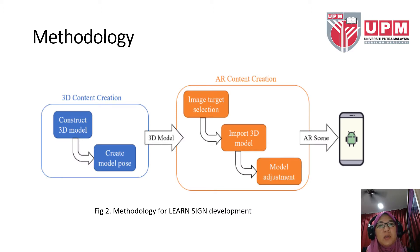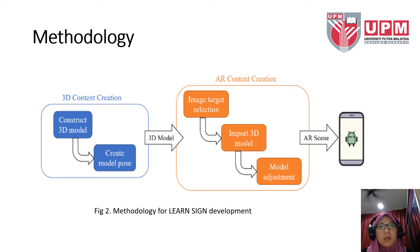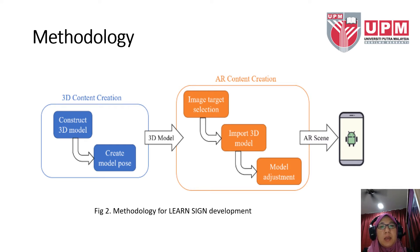The methodology to develop Learn Sign can be divided into two main phases: the 3D content creation and the AR content creation. There are two activities in the 3D content creation phase, namely the 3D model construction and post-model creation. The second phase, AR content creation, consists of three activities: image target selection, the import of a 3D model, and model adjustment.